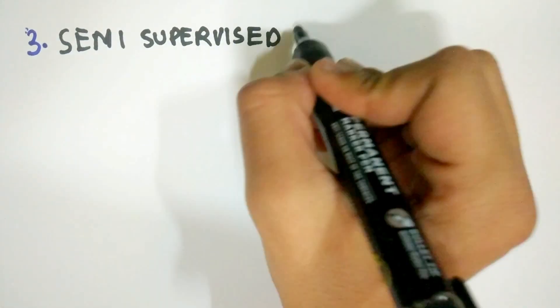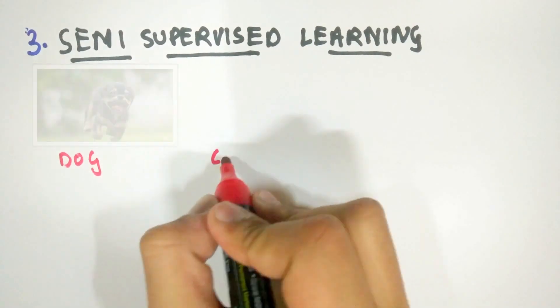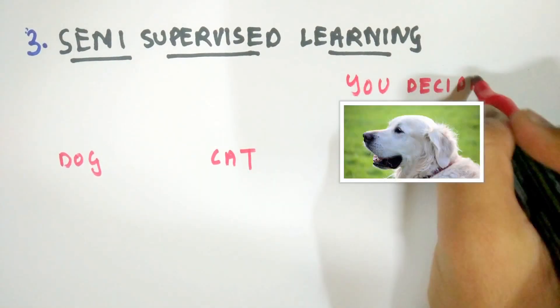Semi-supervised learning is a type of learning where some of the data is labeled while most of it is not labeled. So, the algorithm has to work its way to the solution accordingly.